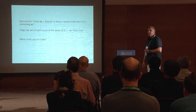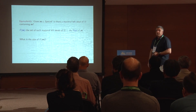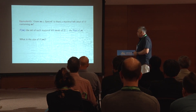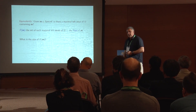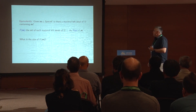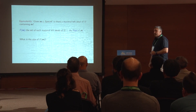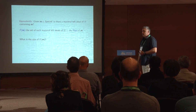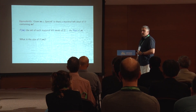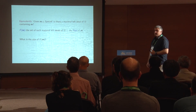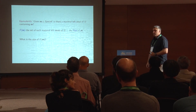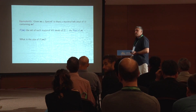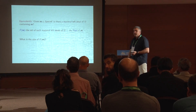Equivalently, given a maximal ideal of gamma, is there a maximal left ideal of the big associative algebra containing it? We call this set of such ideals the fiber of M and denote it as F(M). You can think of this fiber as just a set of isomorphism classes of simple U-modules that contain M's component in their decomposition as a gamma-module. The question is: what is the size of F(M)? Is it trivial, finite, or infinite?